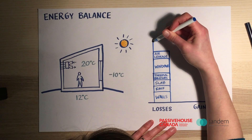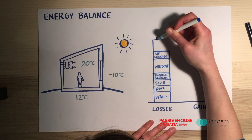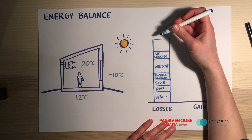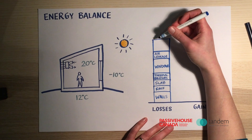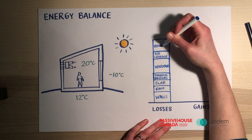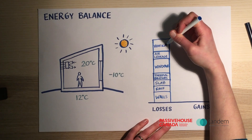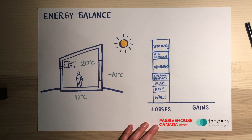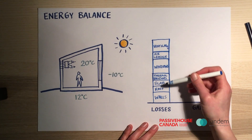And lastly, through the ventilation system. Our ventilation system's job is to bring fresh air in and pull stale air out of the building, but that means we're bringing warm air outdoors, so we're having heat loss.